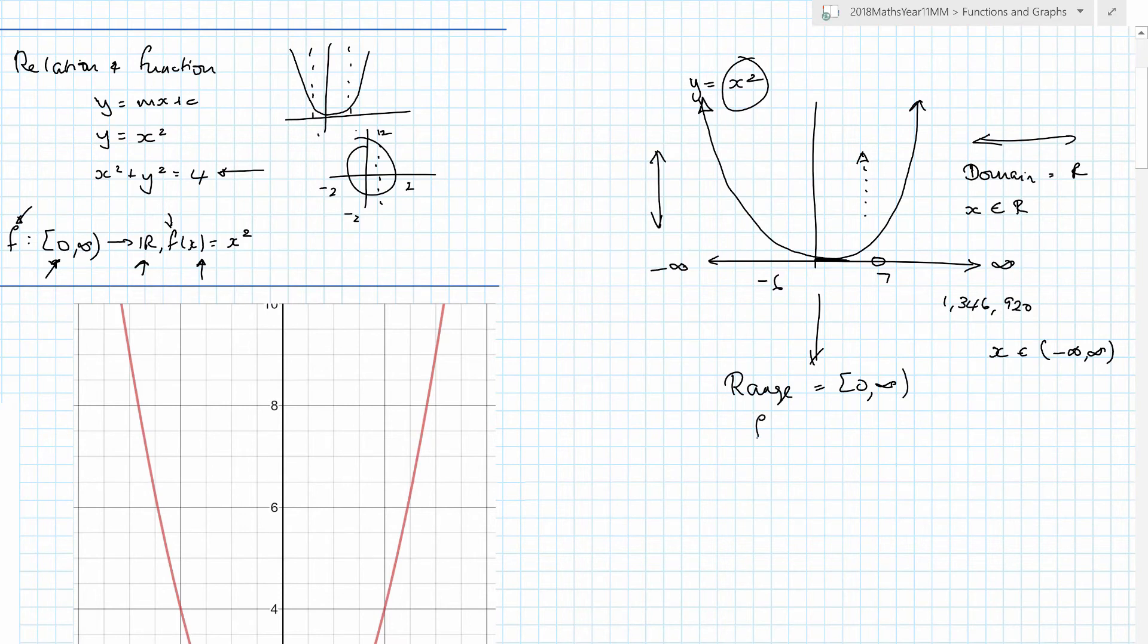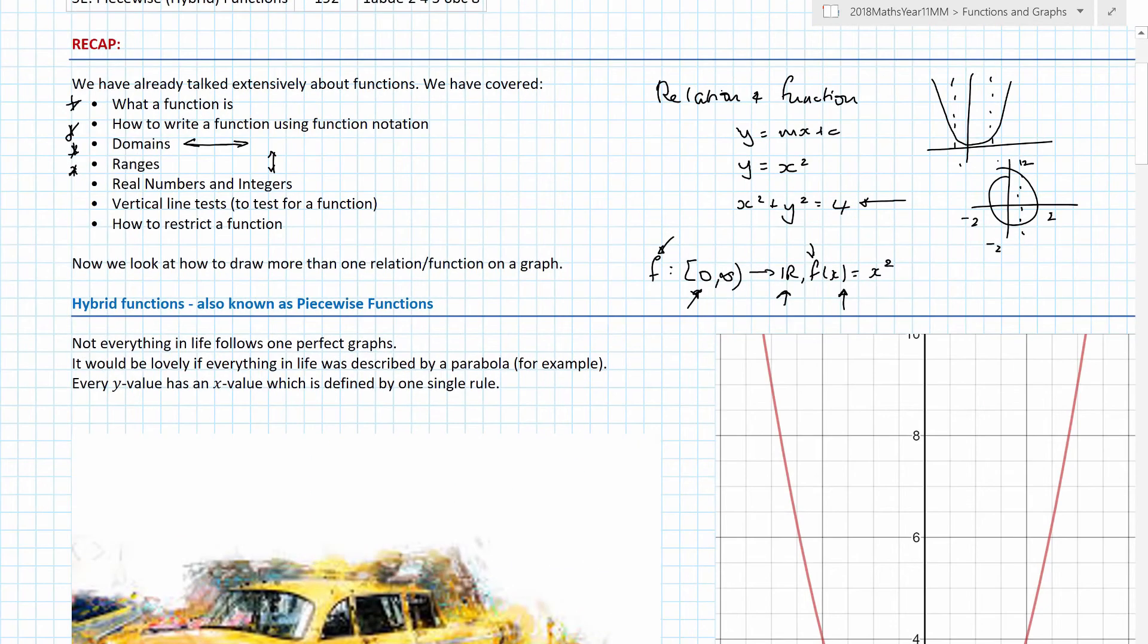So our range in this situation would be from zero, including zero, to infinity. We can write that in a different way. We could write f(x) falls within a subset of zero to infinity, or we could use real number notation by saying ℝ⁺ or zero, because we have to include the value of zero. This here is all positive real values, but zero is neither positive nor negative, so we have to say or zero.